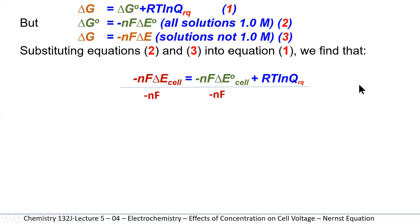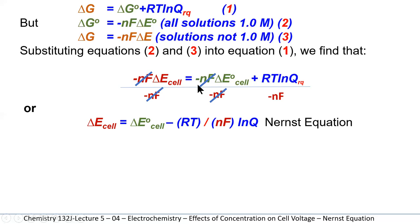So this is an equation we can generate. To simplify it, we're going to divide every term by minus NF, where N is the number of moles of electrons and F is a Faraday, the charge on a mole of electrons. Once we do this, we can cancel out minus NF in these four locations and we end up with this equation.